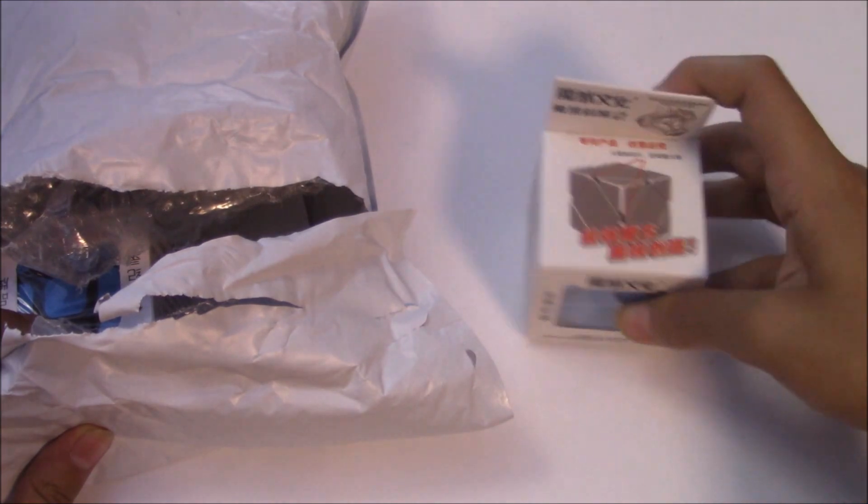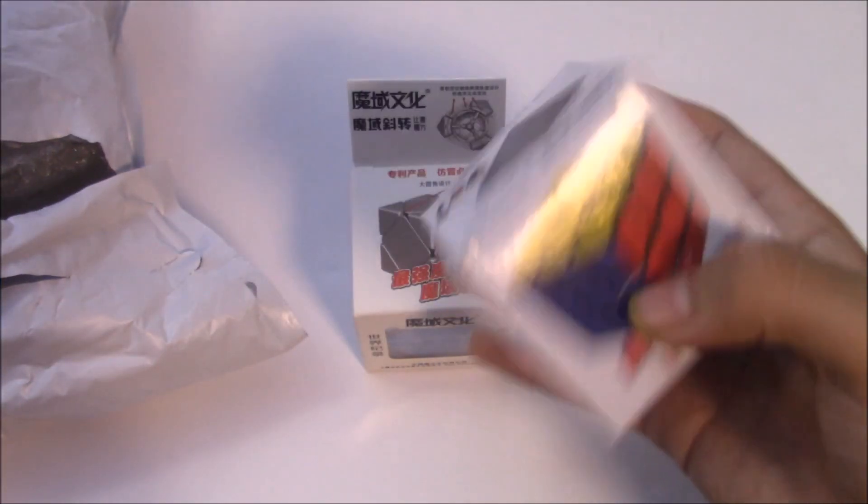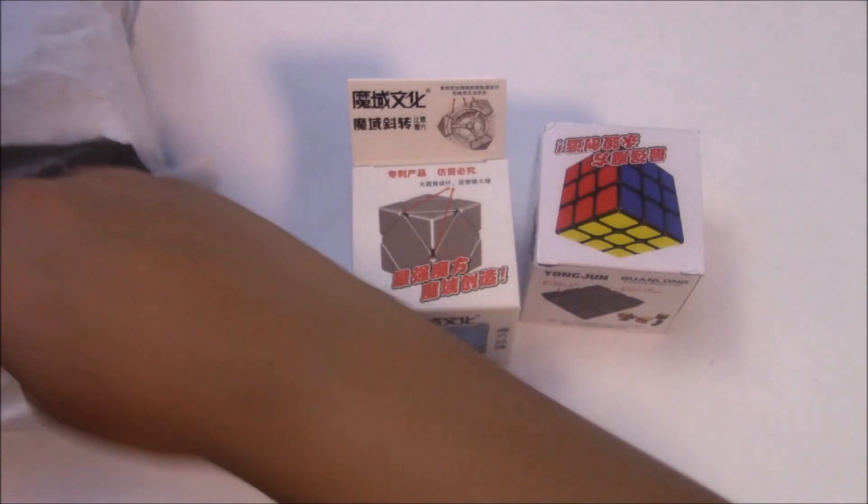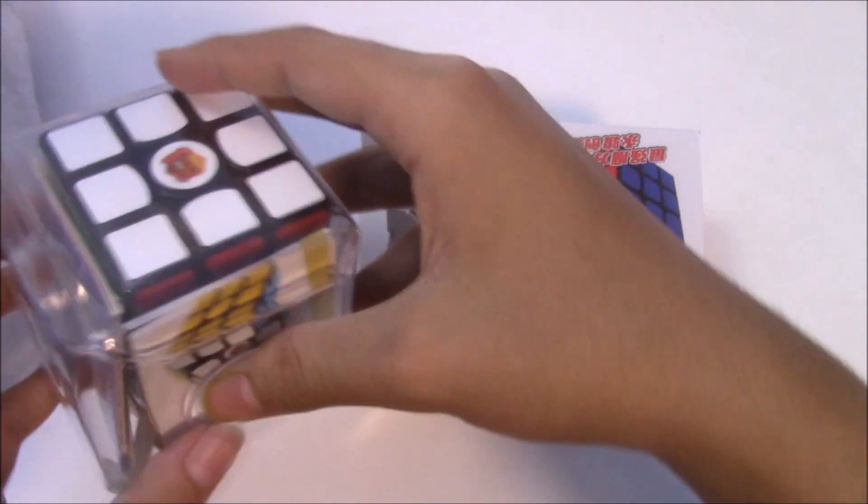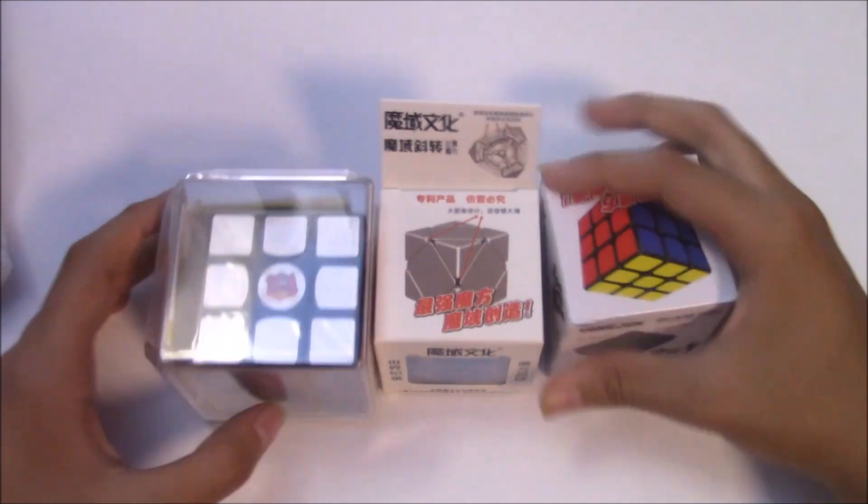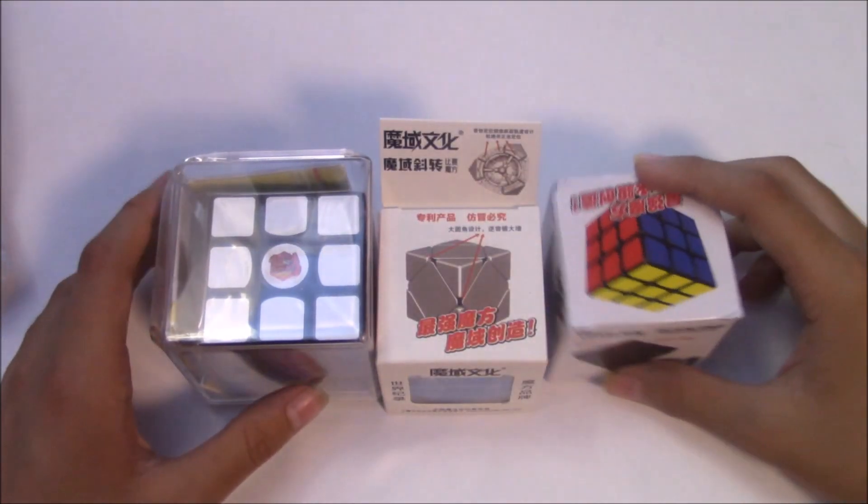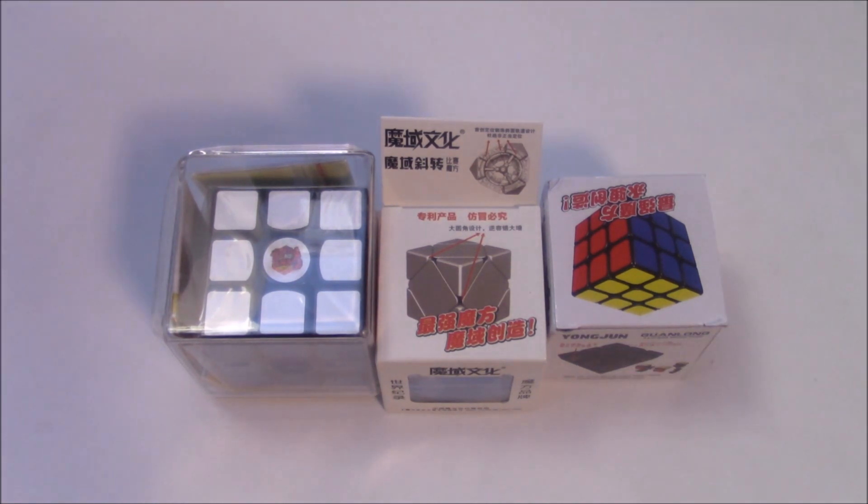The first thing I got was the Moyu Skew cube, and I got this for free, just a YJ Guanlong. And then I also ordered this, and this is the Gans 356, which is really nice. So yeah guys, I got these three puzzles and I'm pretty excited to get into these. So what else is in this package?